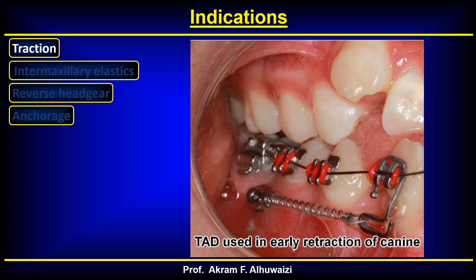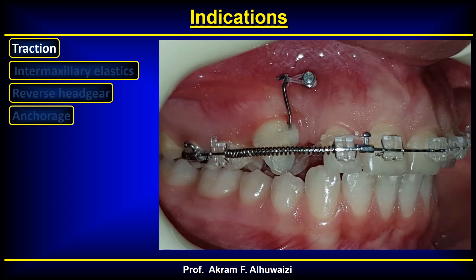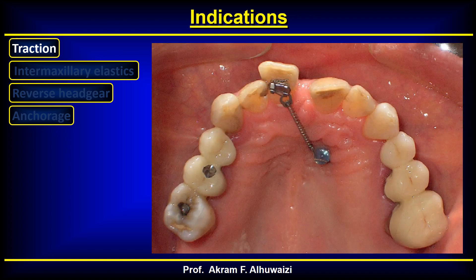Canines can be retracted using TADS, with a power arm used to make the line of action as low as possible to minimize tilting. This is demonstrated in a case where a canine was immediately moved from a very displaced position. One drawback of moving teeth without a bracket is rotation of the tooth; in this case a lingual bond was added to counteract the rotational movement. Similarly, a displaced incisor can be retracted without placing brackets by simply pulling it lingually.